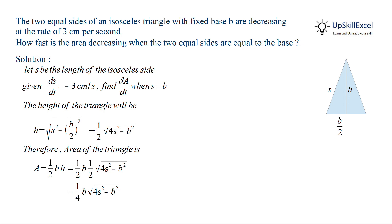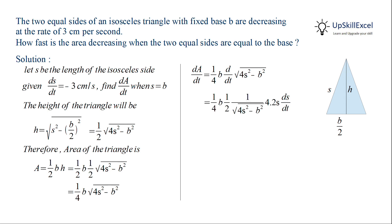Now we have to find dA/dt, so we will differentiate the area with respect to t. Since 1/4 and base are constant, we only differentiate the square root of 4s squared minus b squared. Applying the chain rule, we first differentiate the square root, giving half multiplied by 1 over the square root of 4s squared minus b squared, then differentiate 4s squared minus b squared, which gives 4 multiplied by 2s times dS/dt. We can then cancel the common factors in the numerator and denominator.